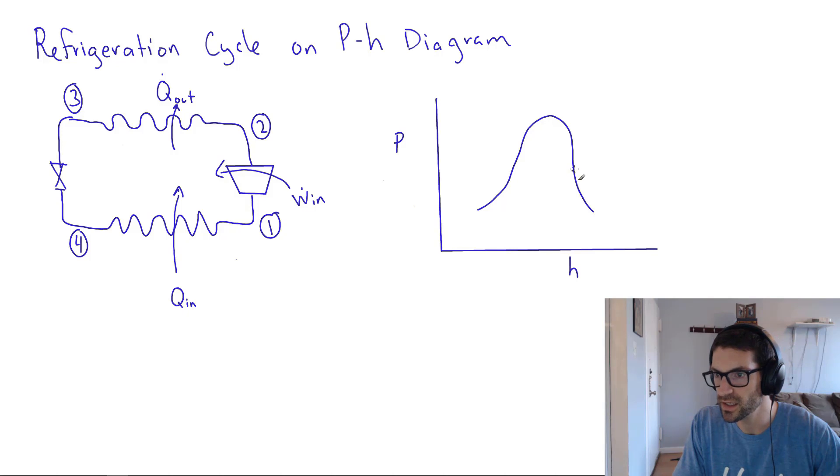So state one is the condition of a saturated vapor. And that's what enters the compressor. And it goes to state two, which is a superheated vapor. That then goes through the condenser, which is a constant pressure process of cooling. That's that low temperature, but still high pressure saturated liquid now.